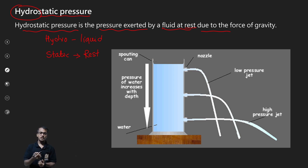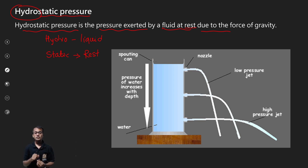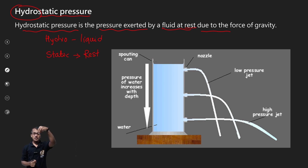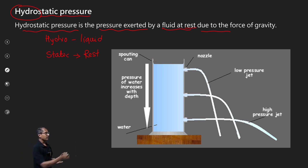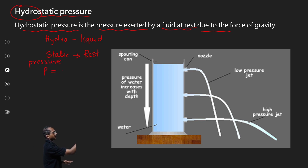So the force of gravity — in which direction is it? It will always be in the downward direction. So gravity force acts downward and it applies pressure. The formula is P equals rho G H.